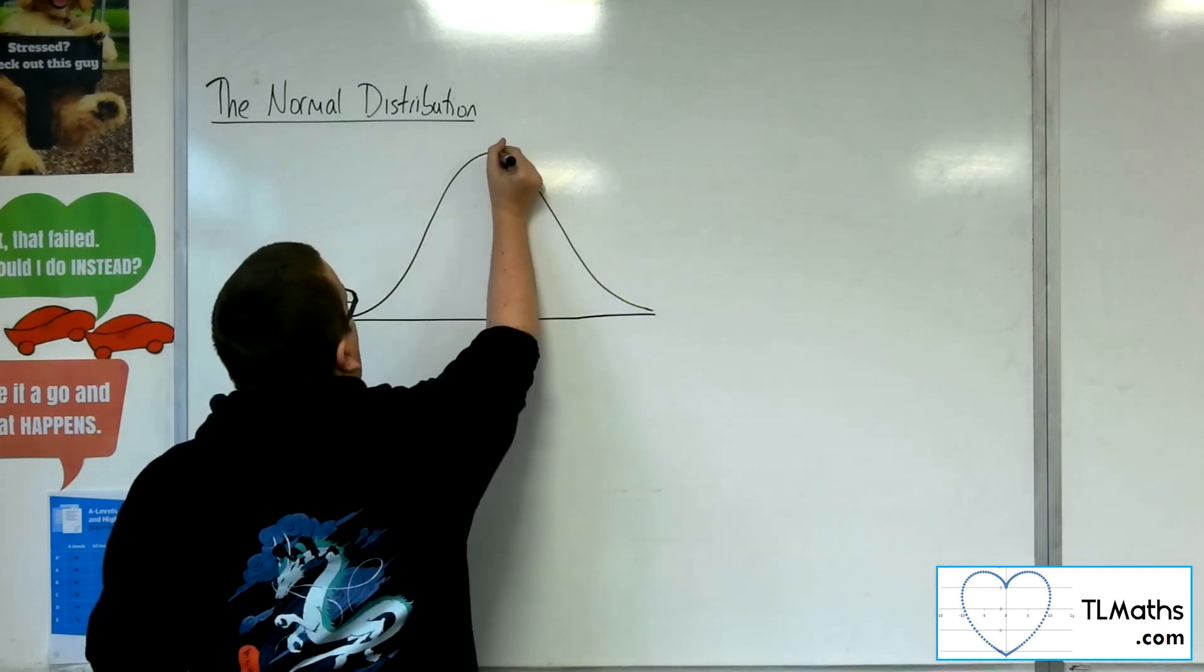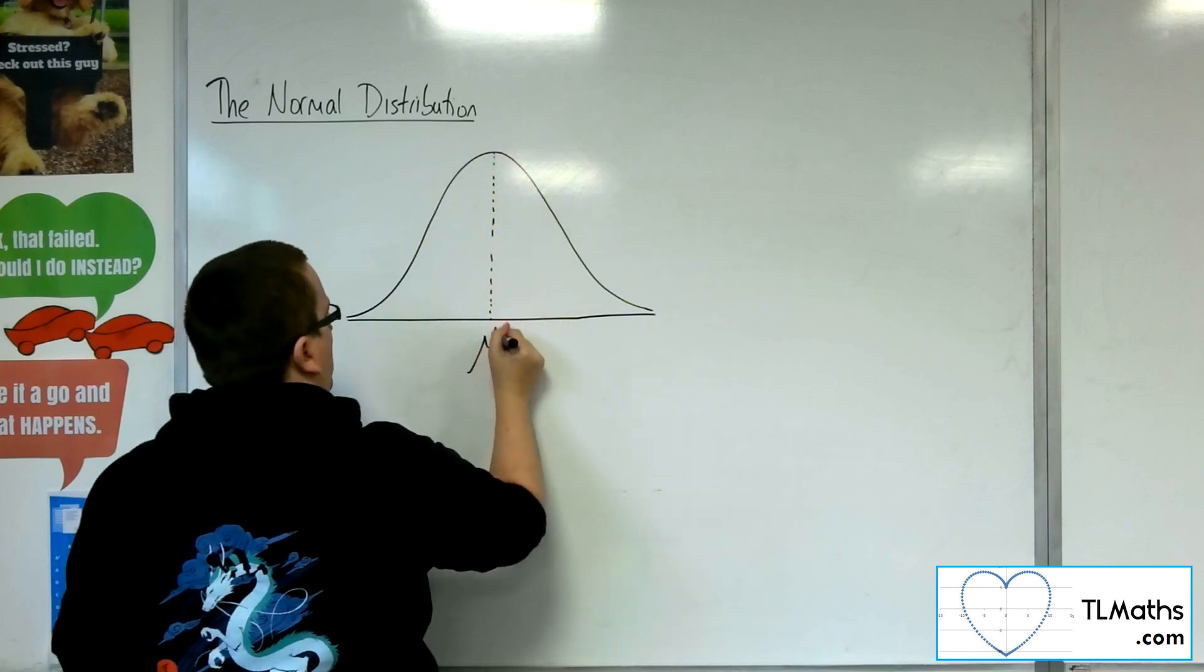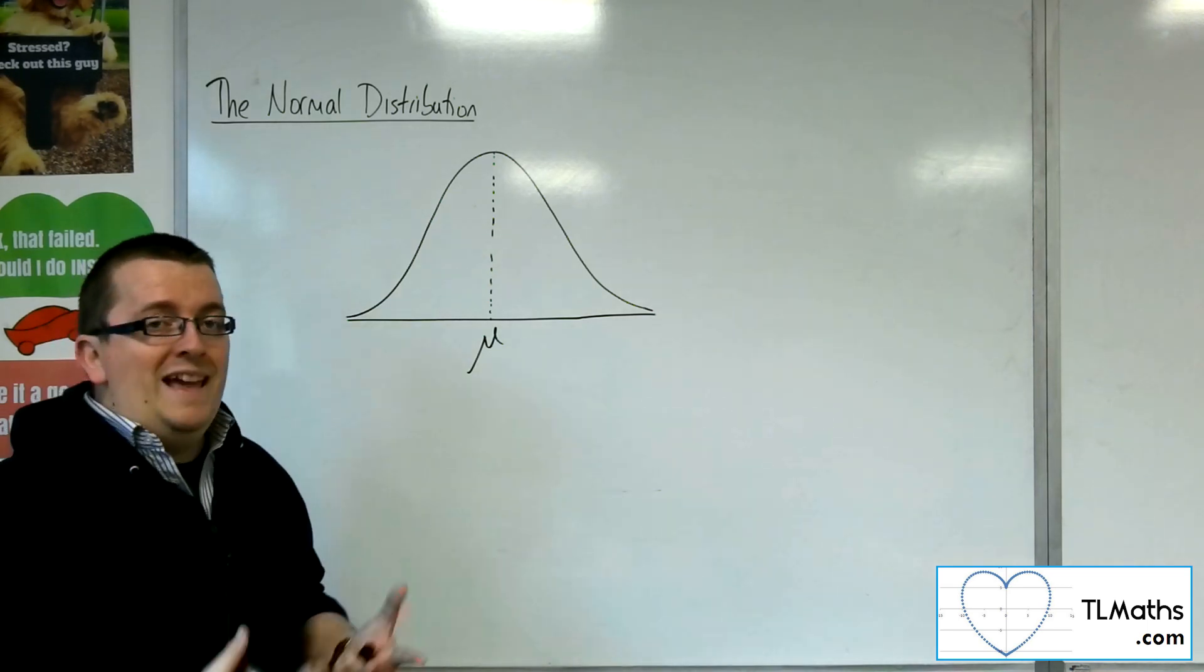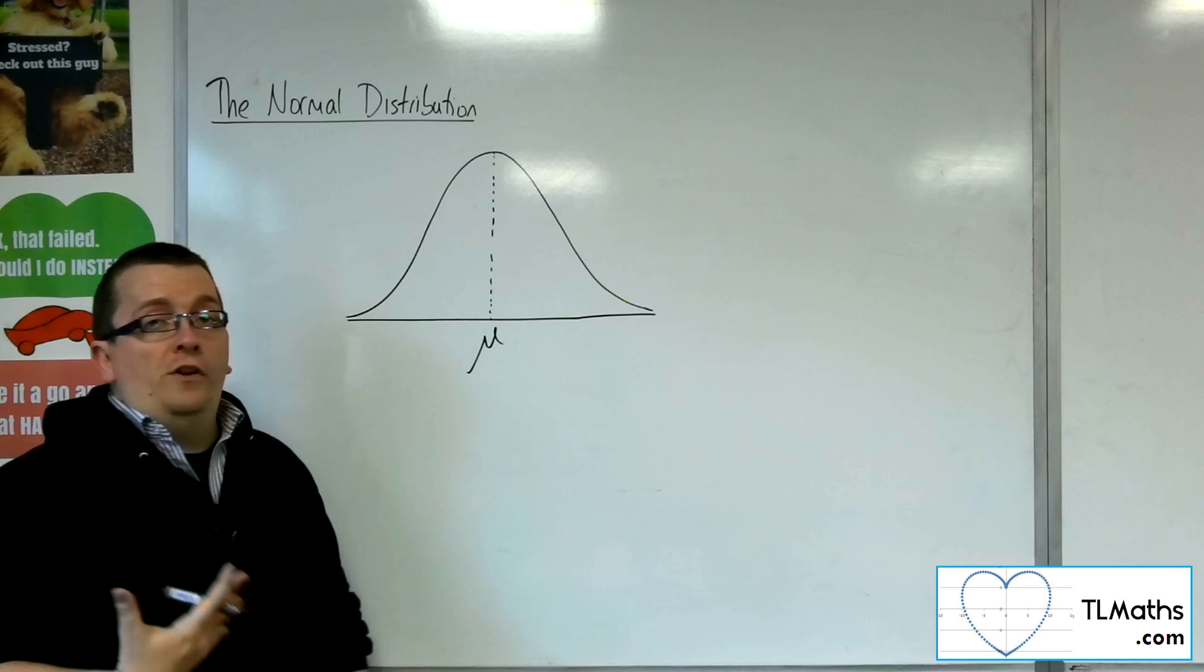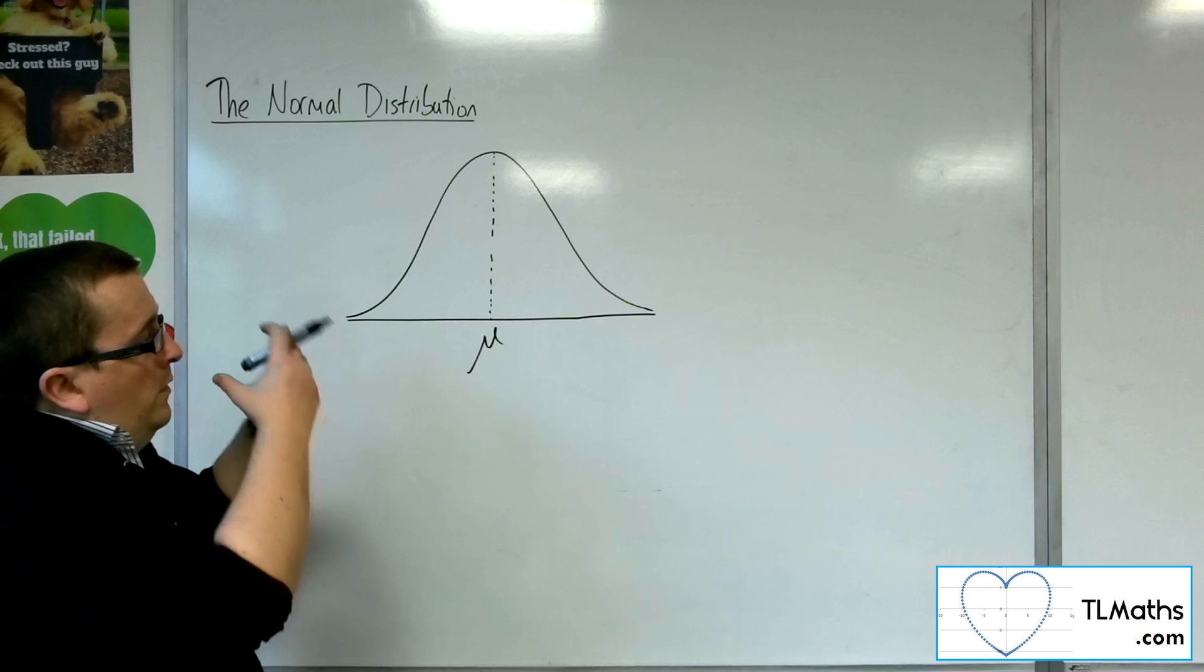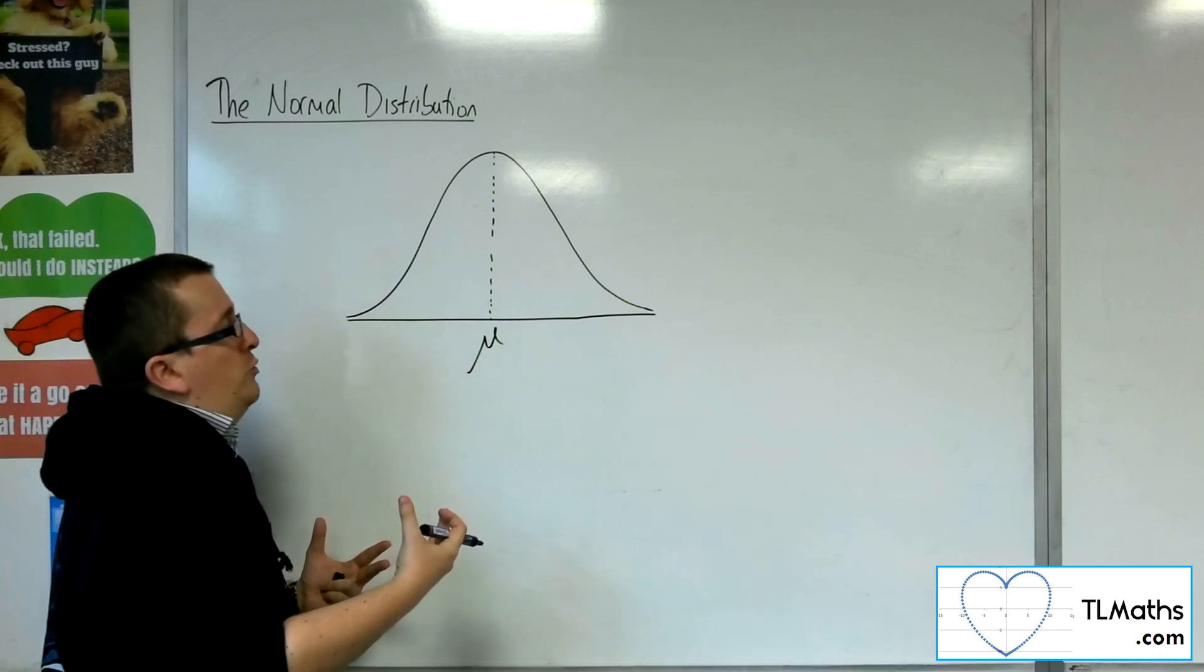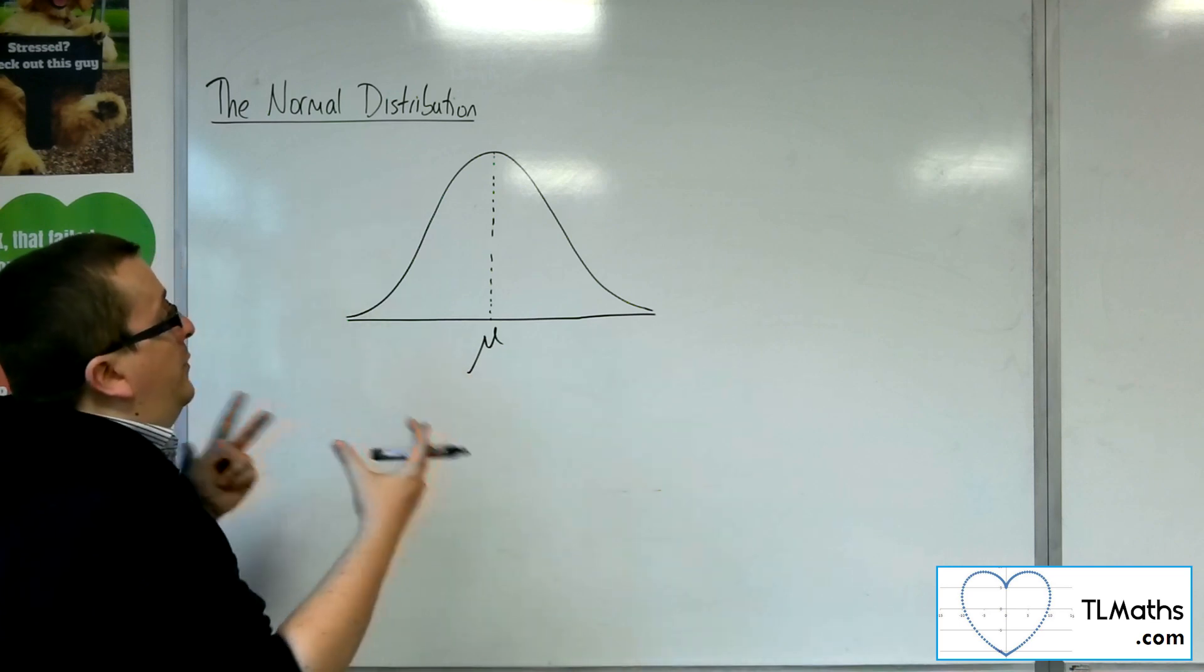So the mean value of the population, we refer to using the Greek letter mu, M-U as it's spelt, but written it is kind of a variation on an M. Okay, so that's our mean, and so the probabilities that go with the normal distribution are the areas within and underneath this bell curve.